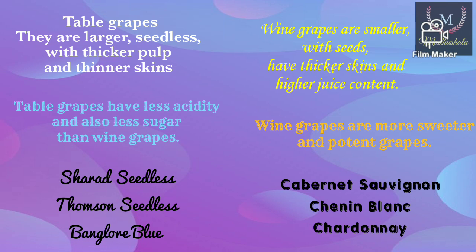Wine grapes have more acidity and sugar than table grapes. Sugar content in wine grapes is between 20 to 24 degrees Brix, while in table grapes it is 16 to 18 degrees Brix. Examples of table grapes are Cheryl Seedless, Thompson Seedless, Bangalore Blue, Bangalore Purple, etc., while examples of wine grapes are Cabernet Sauvignon, Chardonnay, Chenin Blanc, Merlot, Sauvignon Blanc, Shiraz, etc.